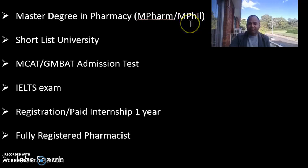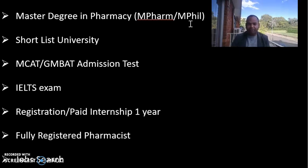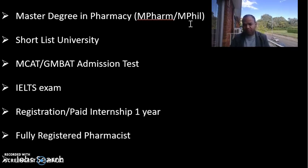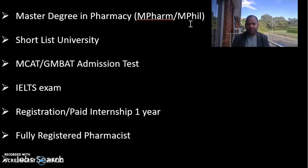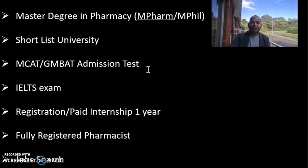The other one is MPhil. MPhil is for those who have a bachelor's degree from Australia — local students. After a bachelor's degree, they can go for a PhD directly, but they have to have a certain grade like an honours degree. Some students whose grades are not high have to go for MPhil first and then they can convert into a PhD. So many local students with lower marks join Master of Pharmacy MPhil first, then after one year they can go for the PhD.